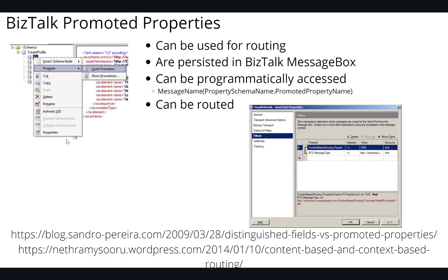As a bit of a review, let's look at BizTalk Promoted Properties and then we'll see similar behavior inside of Azure Service Bus. On the left-hand side we've got a schema, and for a specific node we can go ahead and promote it using Quick Promotion or Show Promotion. The core principle is that we can use it inside of routing. These promoted properties are persisted in the message box and are used as part of tracking — for example in BAM scenarios. We can also programmatically access a promoted property inside an expression shape, using the message name and property schema, though that is more expensive. We can use distinguished fields to do something similar, which is a lighter-weight operation.